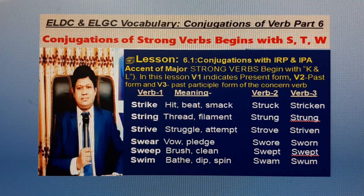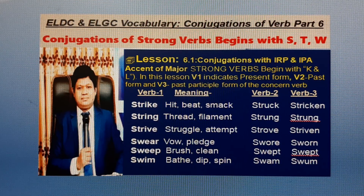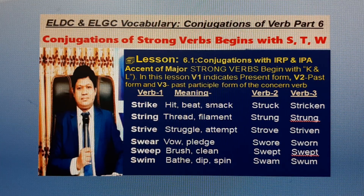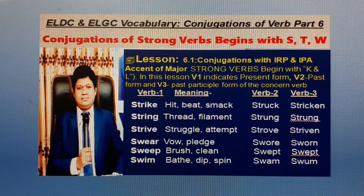Verb B1: Strive. English meaning: Attempt, Struggle, Endeavour. Bangla meaning: Cisterpada. B2: Strove. B3: Striven. Verb B1: Swear. English meaning: Place, Promise. Bangla meaning: Sopat-nya. B2: Swore. B3: Sworn.